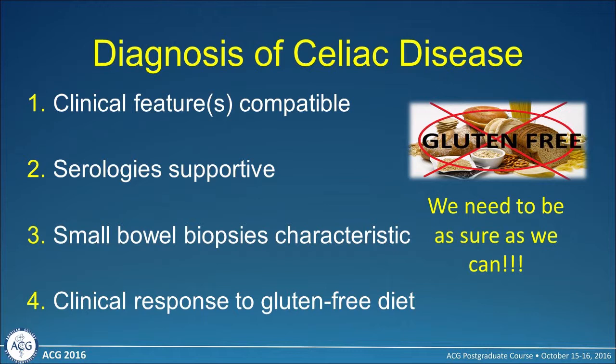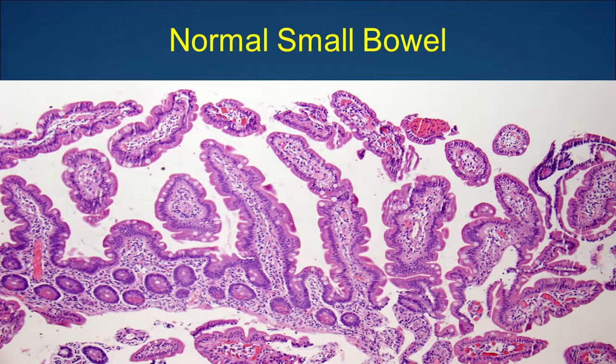We're all familiar with how to make a diagnosis of celiac disease. We like to see a patient who has clinical features that are supportive, serologies that are typically positive, small bowel biopsies that are characteristic, and a clinical response to a gluten-free diet. But we occasionally encounter patients that don't meet all of these criteria, and we really need to do whatever we can within our armamentarium to be as sure as we can about this diagnosis, because a lifelong gluten-free diet for a wrong diagnosis is really tough for the patient.